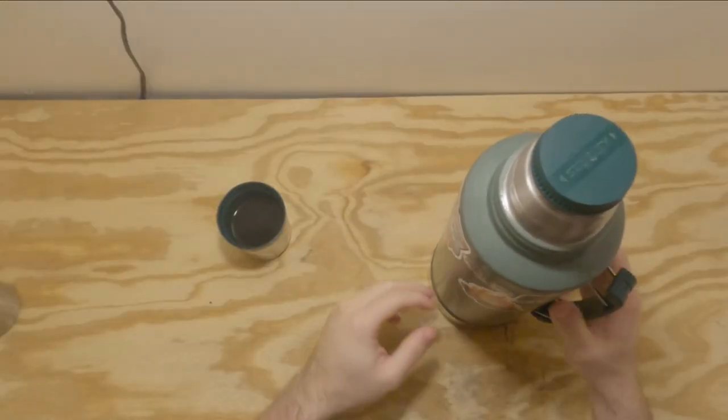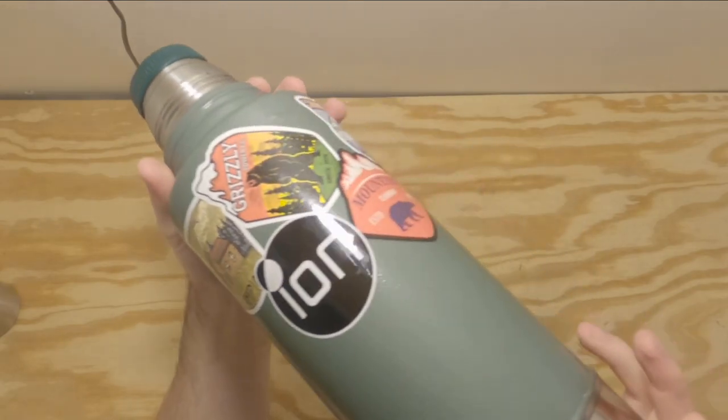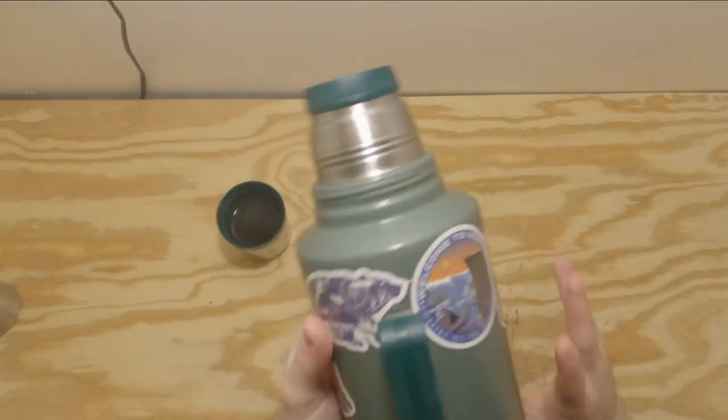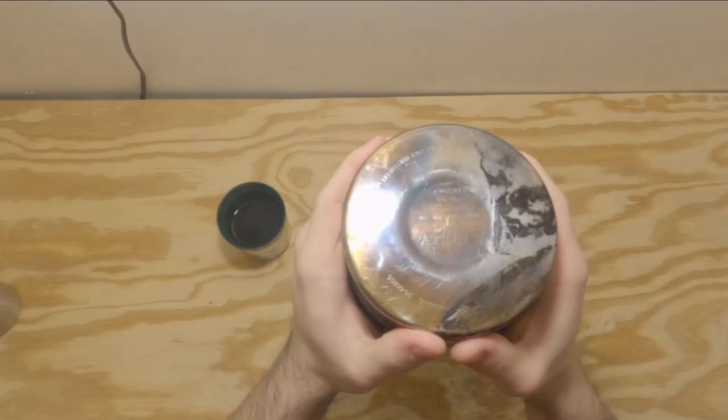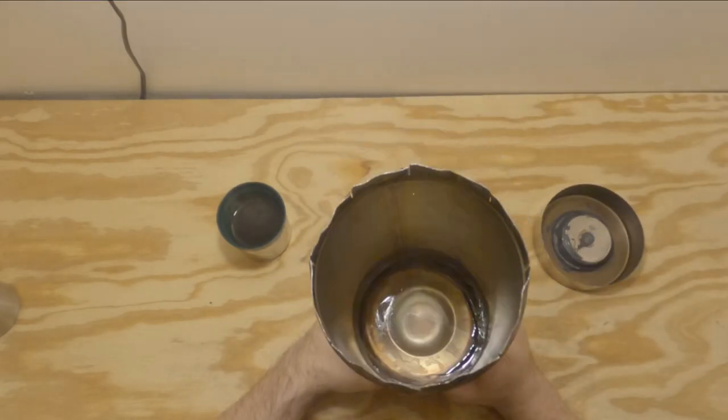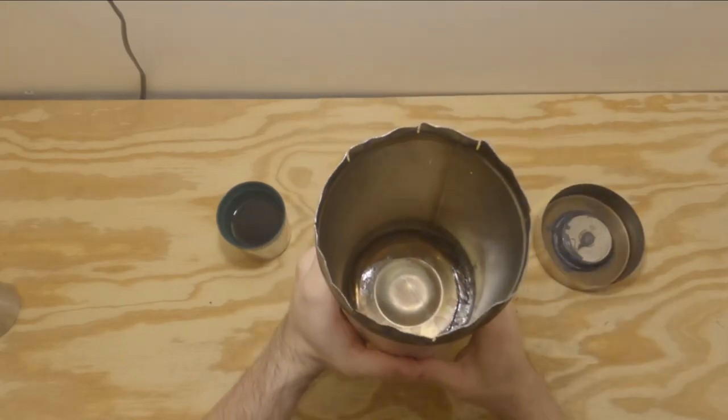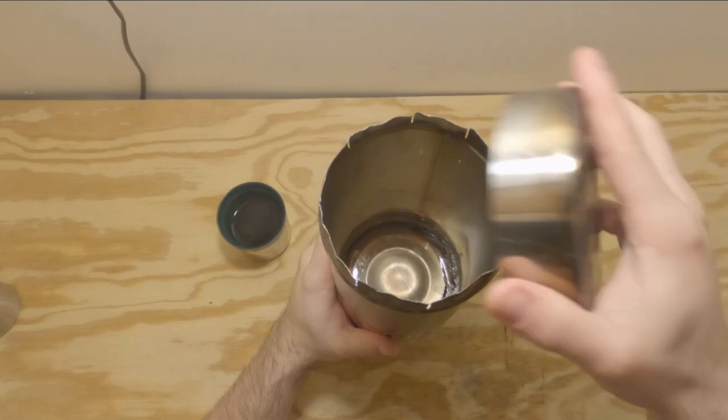Welcome back for part two, the build. The first step in building this diversion safe is buying a thermos. This particular model is the Stanley Classic two-quart version. This bigger version allows for fully concealing equipment using the maximum space available.